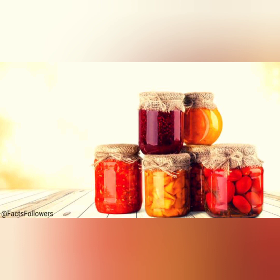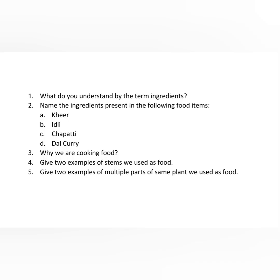These are today's topics. Now note down the questions. Question 1: What do you understand by the term 'ingredients'? Question 2: Name the ingredients present in the following food items — A. Kheer, B. Idli, C. Chapati, D. Dal curry. Question 3: Why do we cook food? Question 4: Give two examples of stems we use as food. Question 5: Give two examples of multiple parts of the same plant we use as food.